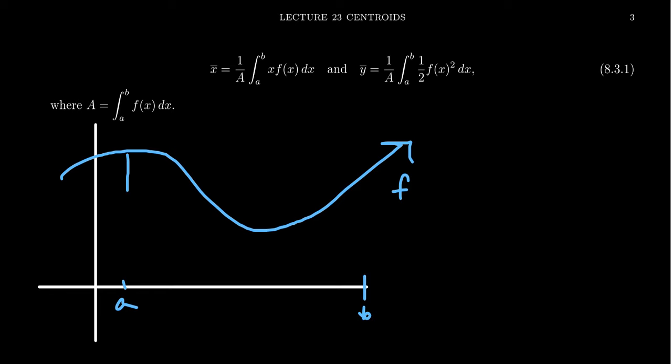And so consider this region that's below the curve, it's above the x-axis, and it's bounded left and right by x equals a and x equals b. So this is a region on the interval a to b. And so this is what we mean by this region R.